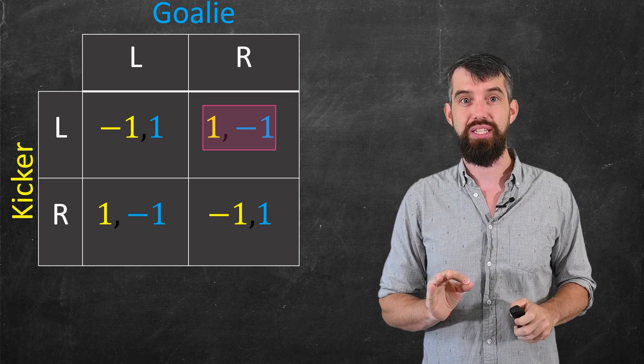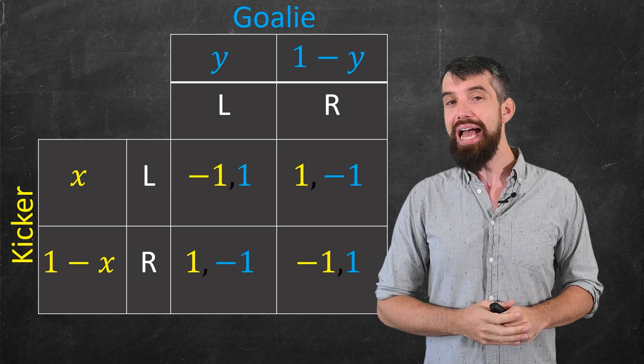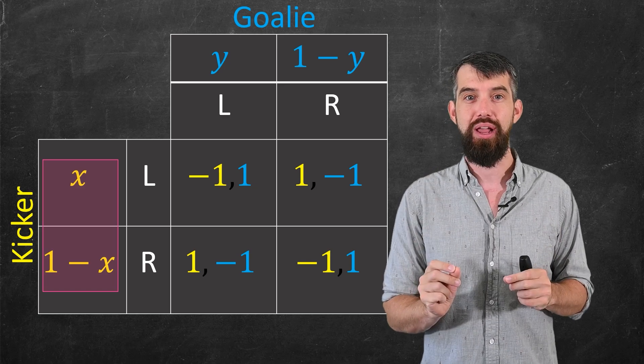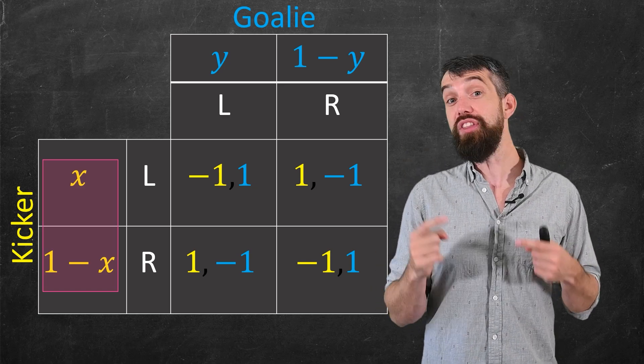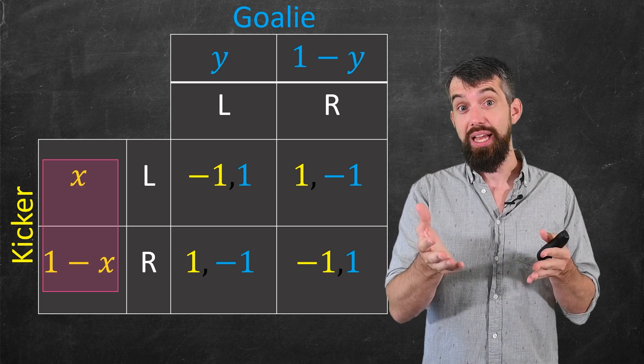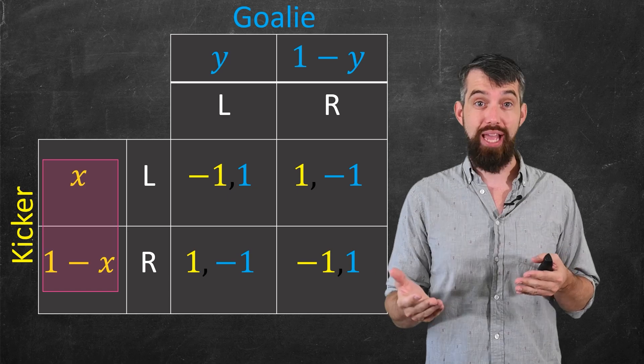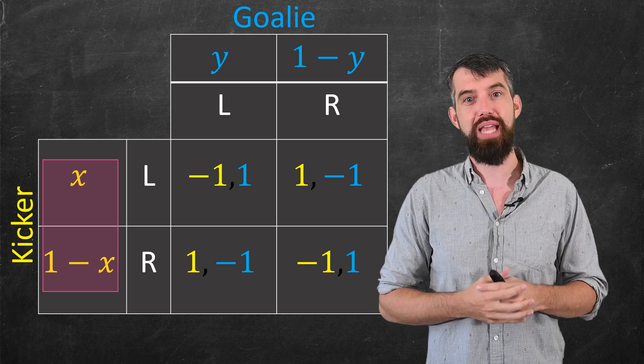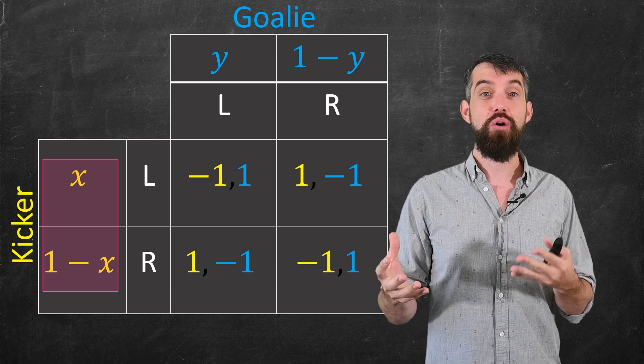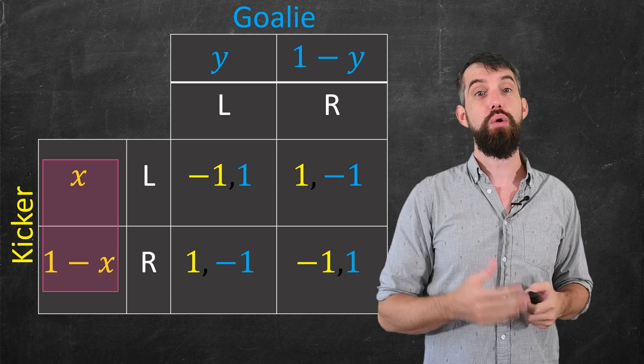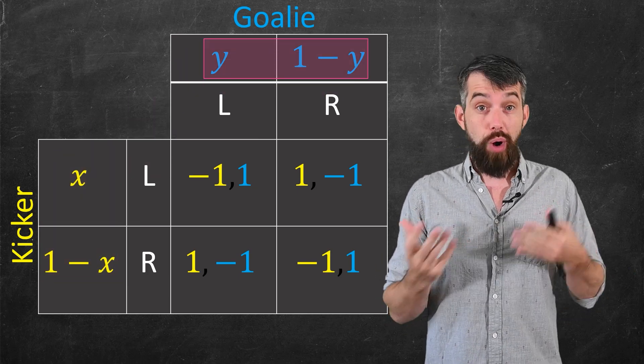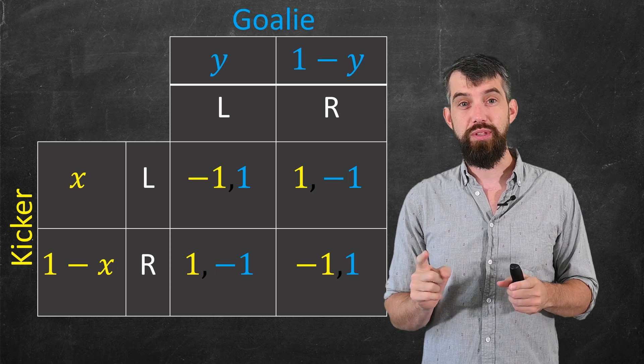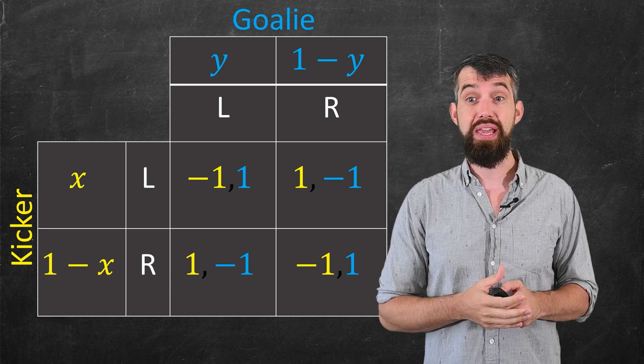But what I'm going to do that's new in our Game Theory series is I'm going to add some variables. First, I'm going to put up an x and a 1 minus x here for the kicker. And what I'm trying to denote here is a mixed strategy. I'm saying here, what if the kicker decides to go left a percentage x, and then they're going right and amount 1 minus x. The kicker only has two options, so x plus 1 minus x is just 1, or 100%. That is, I divided out probabilistically there are two options. Likewise for the goalie. The goalie is going to go left and amount y, and then right and amount 1 minus y. Again, this adds up to 100%.